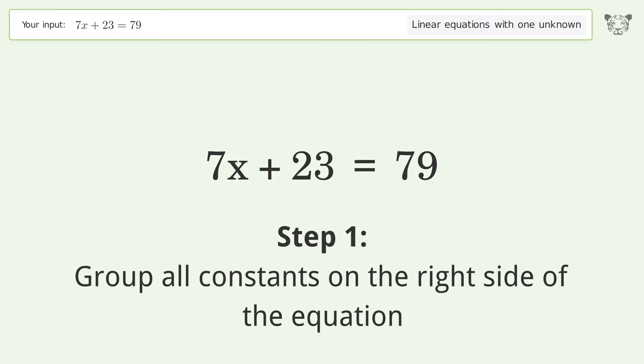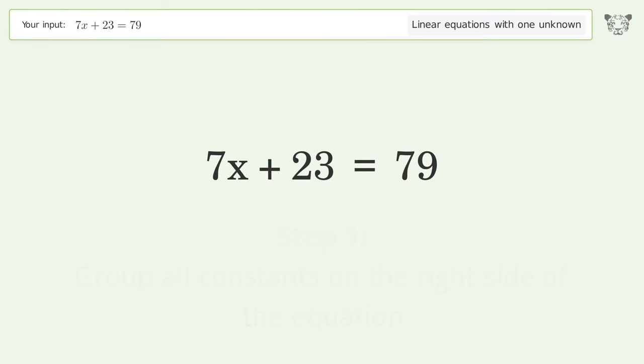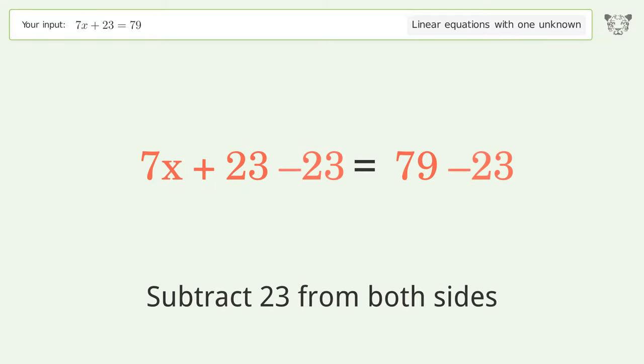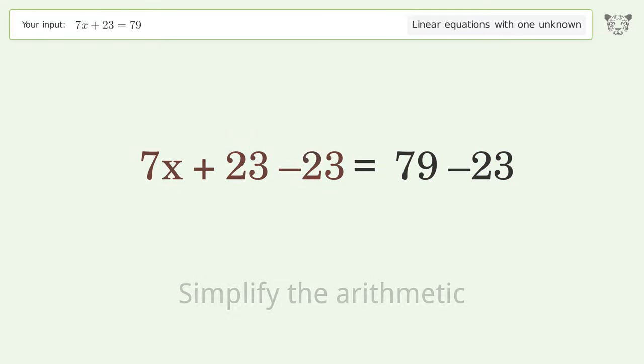Group all constants on the right side of the equation. Subtract 23 from both sides. Simplify the arithmetic.